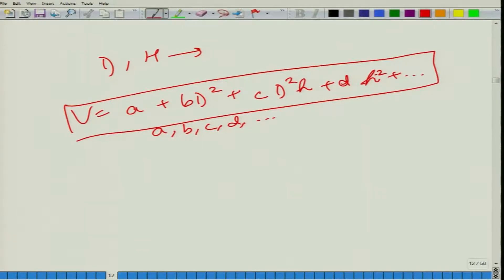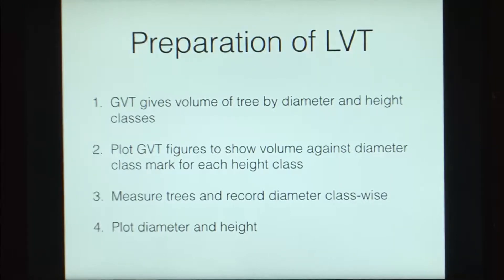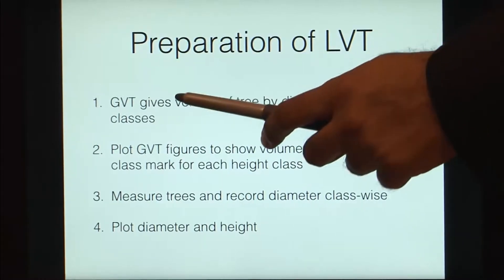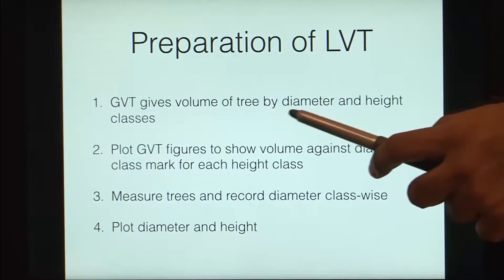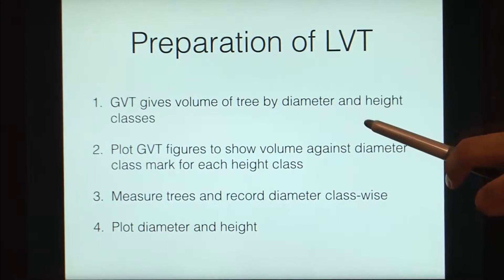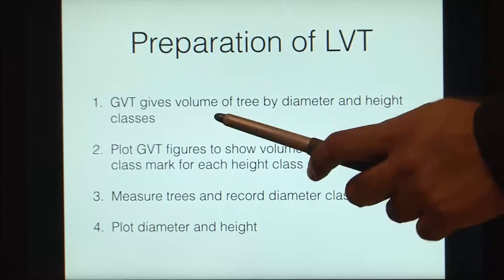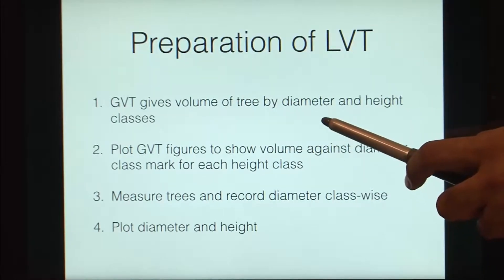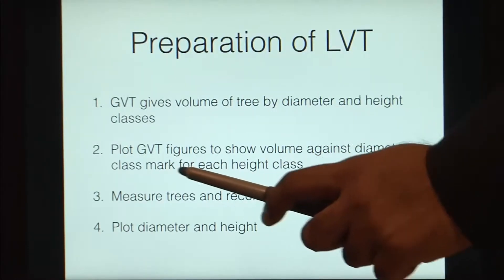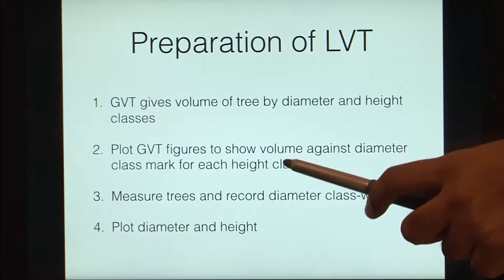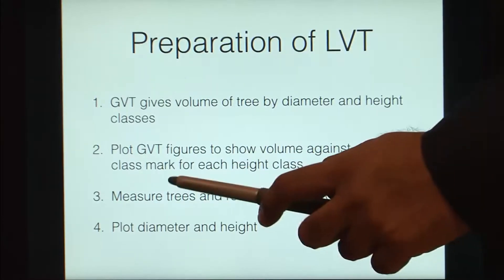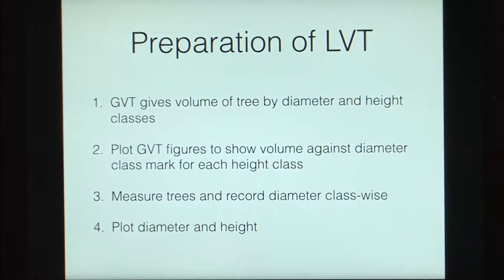A local volume table is derived from a general volume table. Our general volume table gives us the volume of the tree by diameter and height classes. When we want to get our local volume tables, we need the volume in terms of diameter only. We can plot our general volume table figures to show volume against the diameter class mark for each height class.